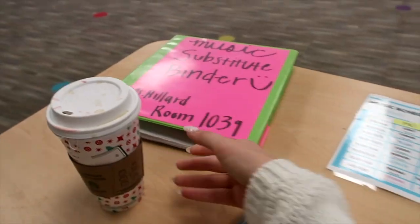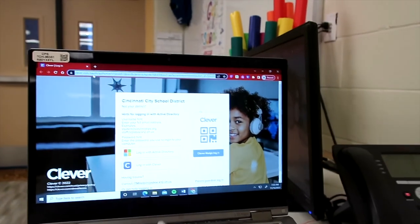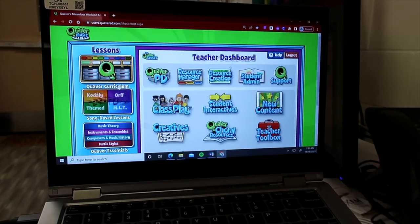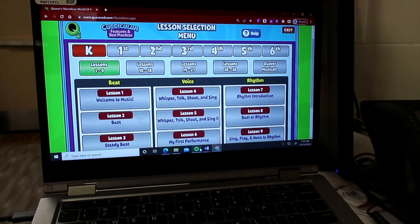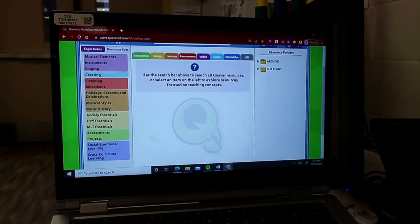So that's everything with the sub binder. I personally think it's very comprehensive. But here is the Quaver stuff I put together. The keyboard unit my kids are doing is very independent. They're very self-sufficient on it now because we've been doing it for two, three weeks in most classes. So they know what to do.